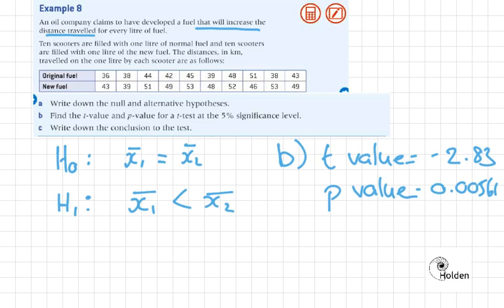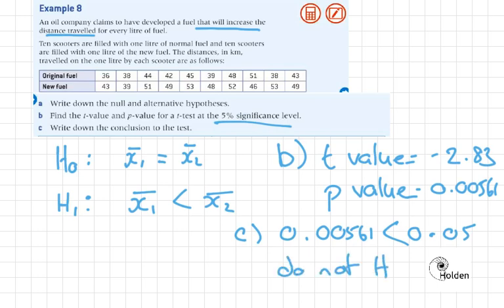Now we make a judgement. Write down the conclusion to this test. Well, 0.00561 compared to 0.05, that comes from the 5% significance level, it's less than. So this means we do not accept H0. We reject H0, so the company's claim is correct.